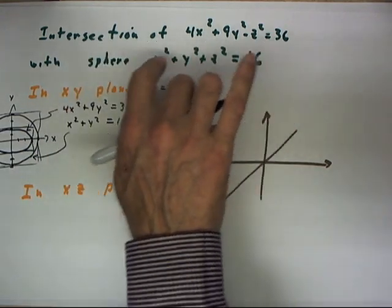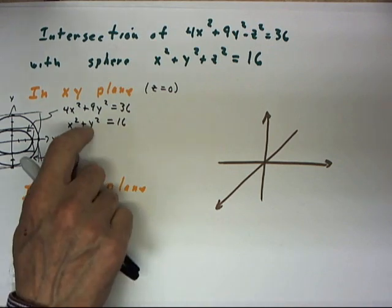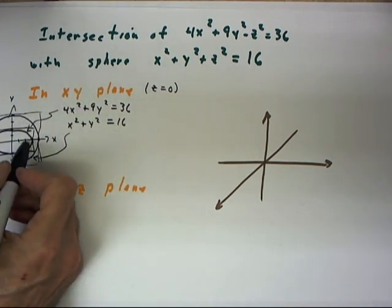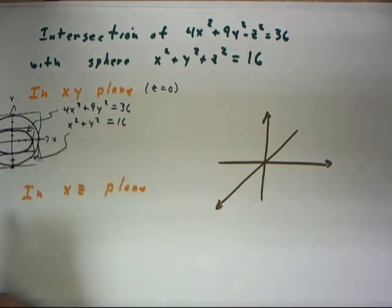Now we're looking at the intersection of these two surfaces and what we see from this graph is they don't intersect in the xy-plane. The ellipse is entirely inside of the circle, there's no point of crossing.